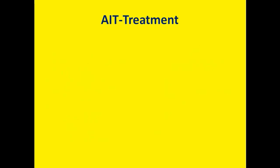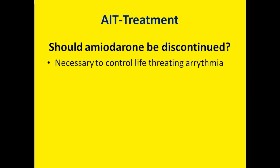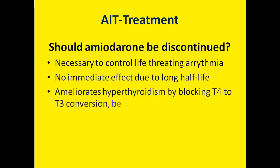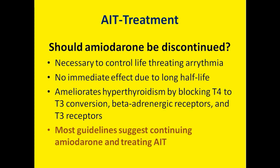Regarding whether to stop or continue amiodarone: amiodarone may have been given for life-threatening arrhythmias, and even if stopped, there is no immediate effect due to its long half-life. Amiodarone itself has been shown to decrease features of hyperthyroidism by blocking T4-to-T3 conversion, beta-adrenergic receptors, and T3 receptors. Therefore, most guidelines suggest continuing amiodarone and treating the AIT.